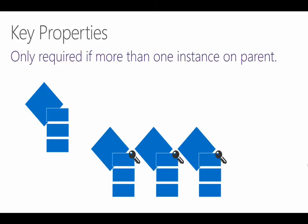Operations Manager needs some way to uniquely identify every single object that it manages. A key property is only required if you have a class with multiple instances on an agent. For any class that can only have one instance — for instance, a service — there would only be one instance on a particular agent, so it doesn't need a key property. This concept of key properties gets a little more complicated when we consider hosting relationships and parent classes, but we'll need to cover relationships first to tell the rest of that story. We'll go just this far now and fill in the rest of the detail in the next module.